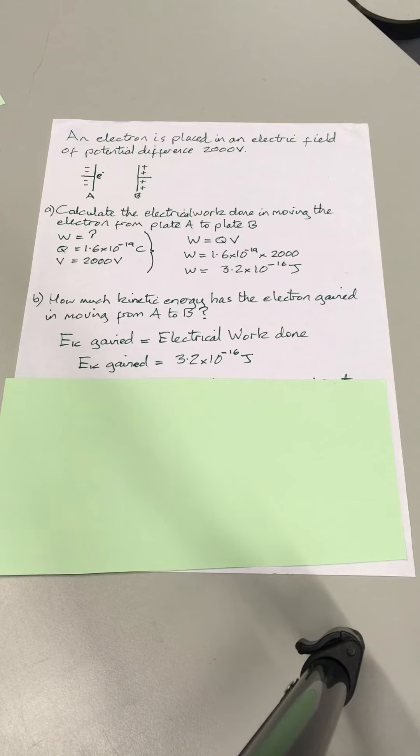And so it asks, how much kinetic energy has the electron gained in moving from A to B? And as I've written there, the kinetic energy gained equals the electrical work done. The electrical work done was QV, which was 3.2 times 10 to the negative 16. So that's the same as the kinetic energy gained.